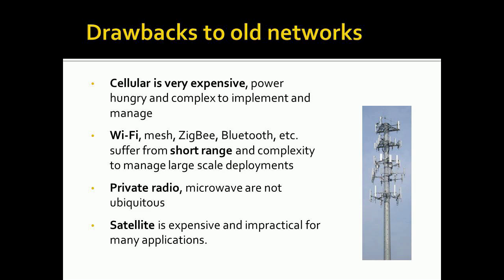Those all have pros and cons. Wireline doesn't go everywhere it needs to go. Cellular is very expensive, not only in the power devices use, but also the complexity of setting up and tearing down a call just to send a short amount of data. 2G was better; 3G is worse because of all the complexity; and LTE is very complex. Wi-Fi mesh and Zigbee are limited because they only go short-range and you need a backbone to tie it together — that gets expensive. Private radio and microwave aren't ubiquitous. And satellite covers large areas but is very expensive and doesn't have good penetration because of the frequencies they use.